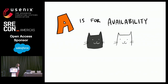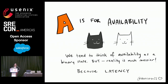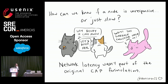A is for availability. We tend to think of things as being available or not, online or offline. But it's not really a binary state because in reality things are a lot messier — we have network latency, which begs the question: how can we know if a node is unresponsive or just being slow? Network latency wasn't part of the original CAP formulation, but it has some really important impacts on detecting and responding to network partitions.